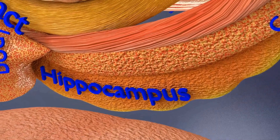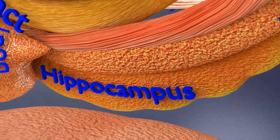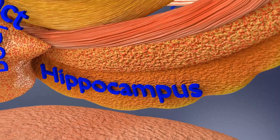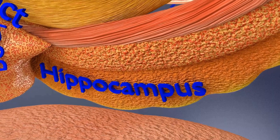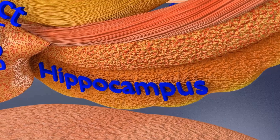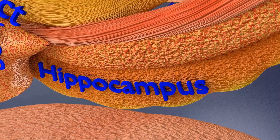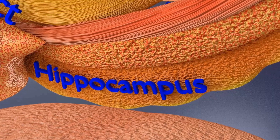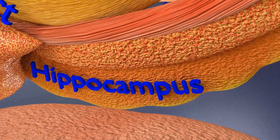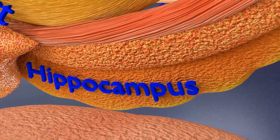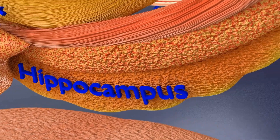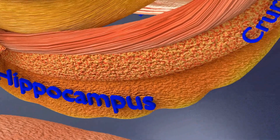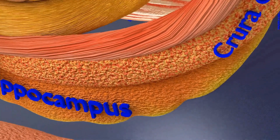The hippocampus is part of the limbic system and plays important roles in the consolidation of information from short-term memory to long-term memory, and in spatial memory that enables navigation. In Alzheimer's disease and other forms of dementia, the hippocampus is one of the first regions of the brain to suffer damage.